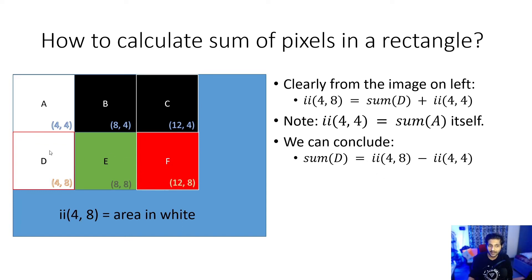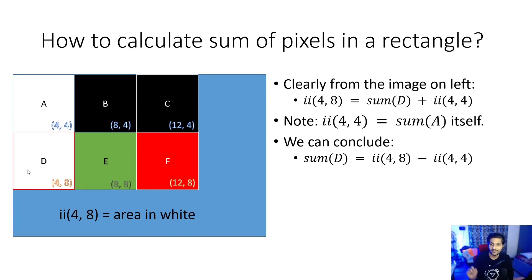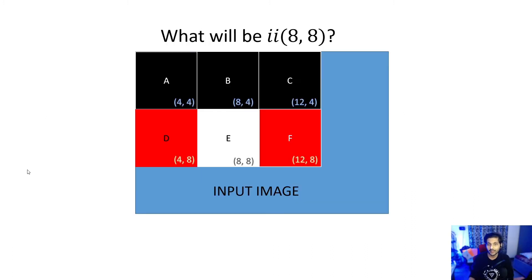And remember, our final goal was to find differences between all these sums. The first step is always to find the sum, then you can find the difference. We have found the sum of all the pixels in rectangle D. Let's go forward and try to find it for E. But before that, we have to find what is the integral image at location (8,8).